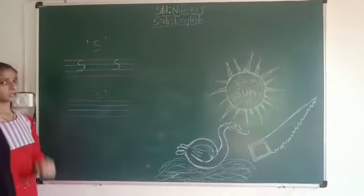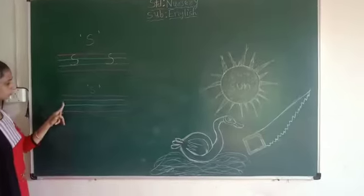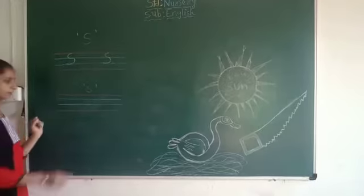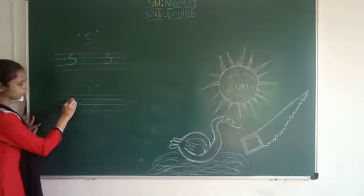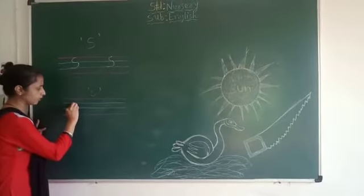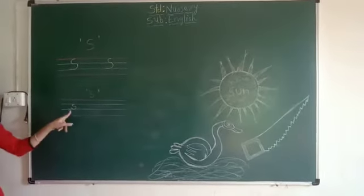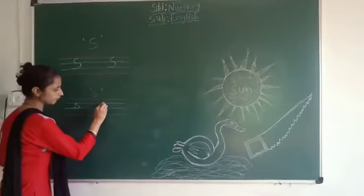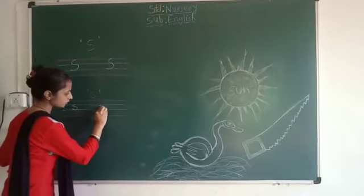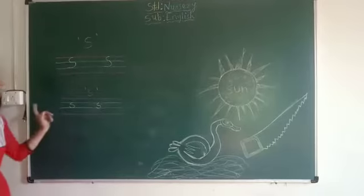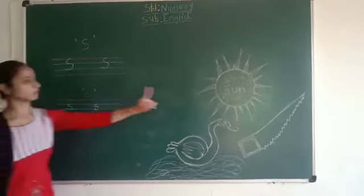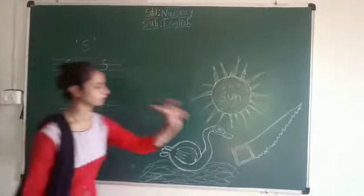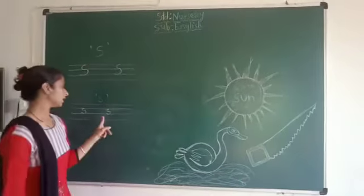Now how to write baby S for sun? Look here. Touch blue to blue light. Baby S for sun — write it blue to blue light. Make it a half cup, then again a half cup. This is called baby S for sun. Baby S for sun. Baby S for so.